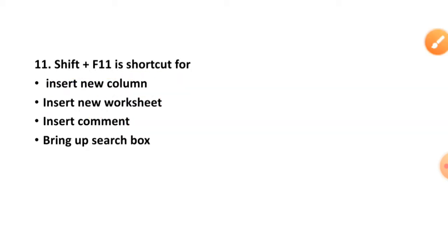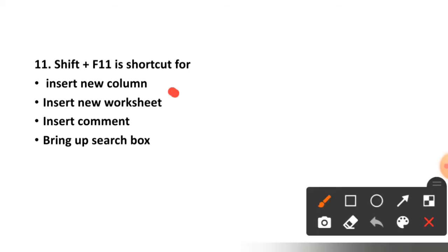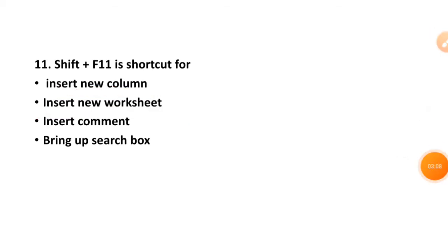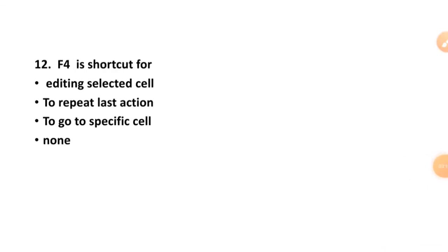Question number eleven: Shift plus F11 is a shortcut for insert new column, insert new worksheet, insert comment, or bring up search box? The correct option is option number two, insert new worksheet. Question number twelve: F4 is a shortcut for what?